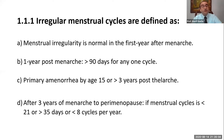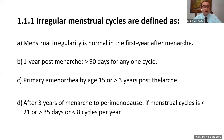Regarding the definition of menstrual irregularity: it is normal in the first year after menarche, so in the first year there is nothing called menstrual irregularity — it's physiologic. After the first year, if the cycle is more than 90 days, this is menstrual irregularity. Primary amenorrhea by age 15 or three years post-thelarche is considered irregularity. After three years of menarche till perimenopause, cycles are supposed to be regular, defined as cycles coming less than 21 days (polymenorrhea), more than 35 days (oligomenorrhea), or less than eight cycles per year.